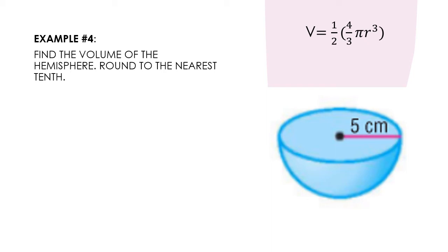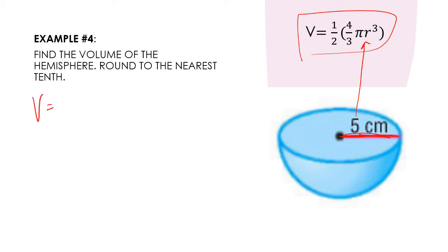Example number four. Just like I showed you in those pictures before — a hemisphere. A hemisphere is half of a sphere. So I've included the formula: volume equals one-half, then in parentheses four-thirds pi r cubed. I'm multiplying by a half, but remember you can always divide by two. Looking at our picture, we have five centimeters — that is going to be your radius. Substitute that value into your radius. So, volume equals one-half times four-thirds pi, with radius five raised to the third power.